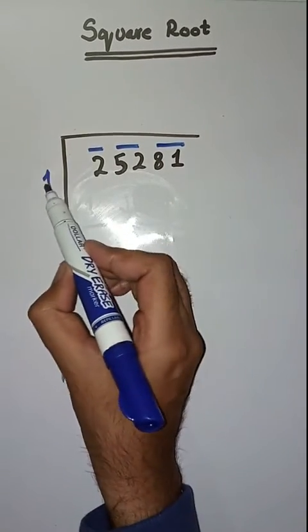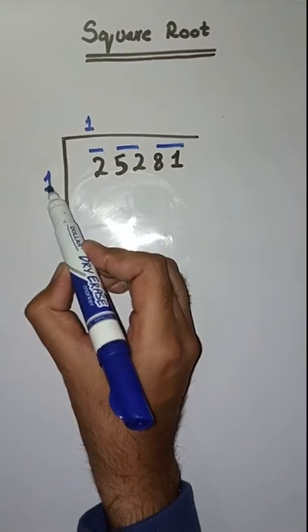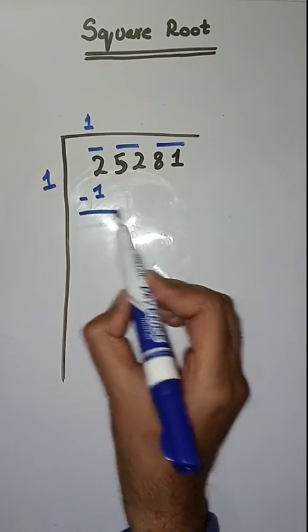So first we have to solve 2. So we take a number 1. 1 times 1 is 1. Minus, we will get 1.